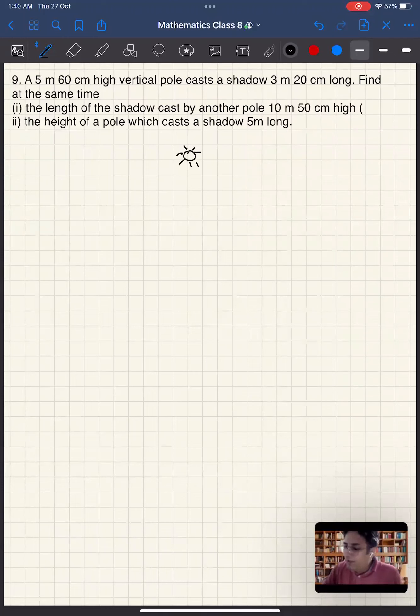Okay, now let's look at question number 9. Let's say there is sun and then there are two poles. One pole is 5 meters 60 centimeters. Let's say it is 5.6 meters. It casts a shadow of 3 meters 20 centimeters or 3.2 meters.